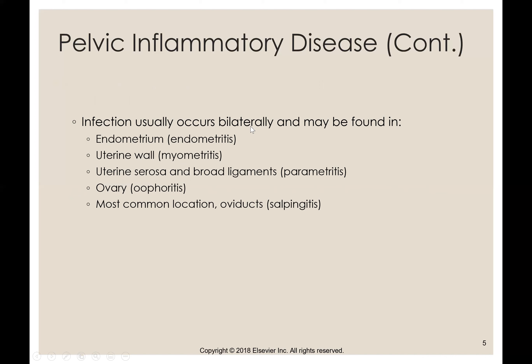The infection usually occurs bilaterally and may be found in the endometrium, the uterine wall, the uterine serosal surface and broad ligaments, the ovary, and most commonly in the fallopian tubes. Endometritis is considered stage one because the infection from the STD makes its way up through the uterus into the endometrium. If left untreated, it moves through the fallopian tubes and then to the ovary.